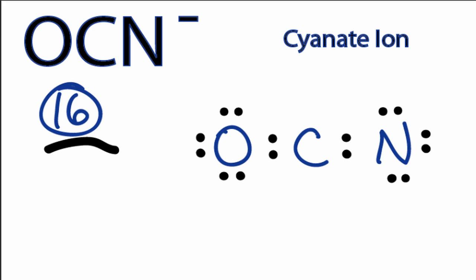Nitrogen is less electronegative than oxygen. That means it's more likely to give up valence electrons, to share them. So let's move them from the nitrogen.